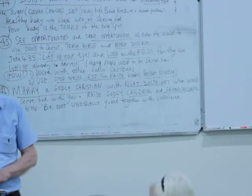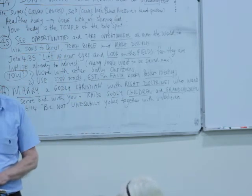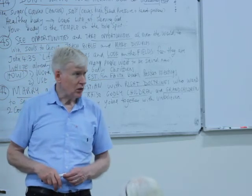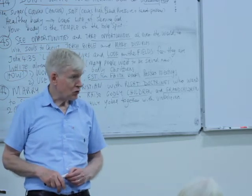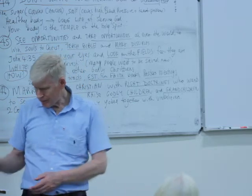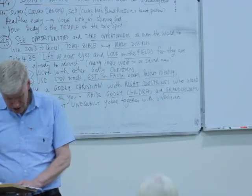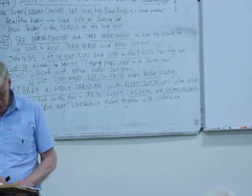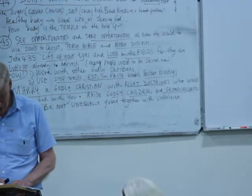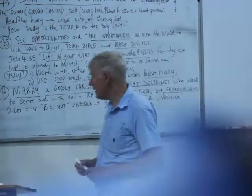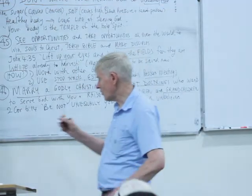Raise godly children and strong godly children — a strong godly family tree. Let's look at the next one. Number 47: Die to yourself and live for Christ. Galatians 2, verse 20. Die to yourself and live for Christ.